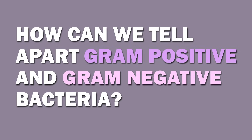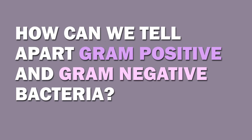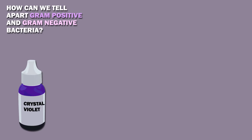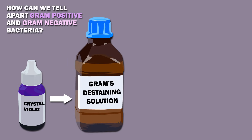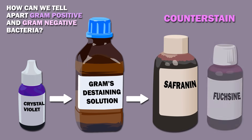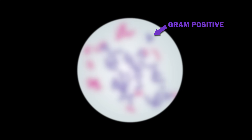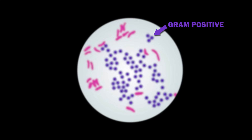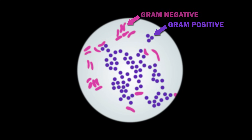We can differentiate between gram-positive and gram-negative bacteria by dyeing them with crystal violet, and then washing them with a decolorizing solution. Then a counterstain is added, for example safranin or fuchsine. Gram-positive bacteria will retain the crystal violet dye and remain purple, while gram-negative bacteria will be stained pink.